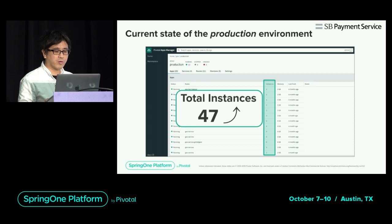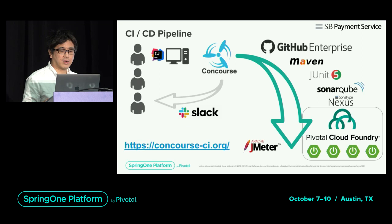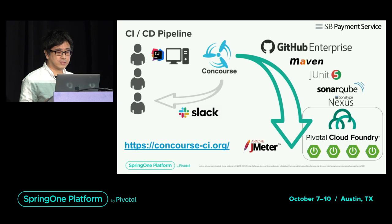Let's move on to the next topic: CI/CD pipelines. This slide illustrates a rough flow of our CI/CD in development. The CI tool retrieves the source code from GitHub Enterprise, then builds with Maven, runs unit tests with JUnit 5, analyzes source code with SonarQube, uploads the JAR to Nexus, and then finally deploys to PAS.